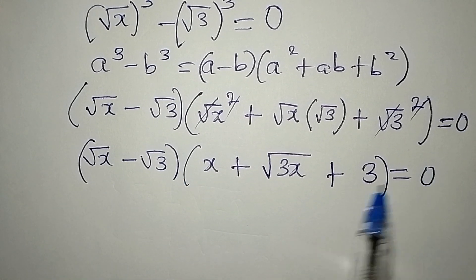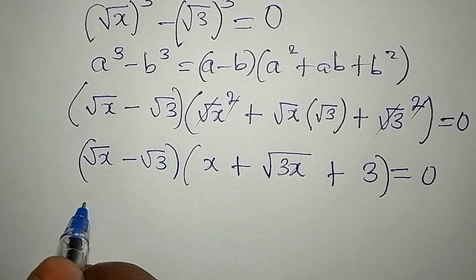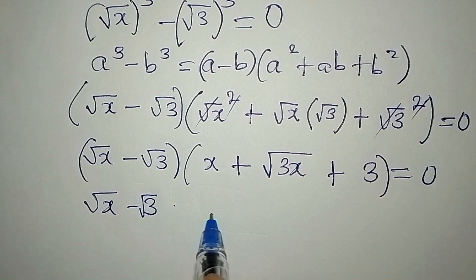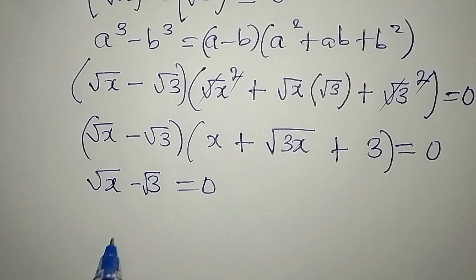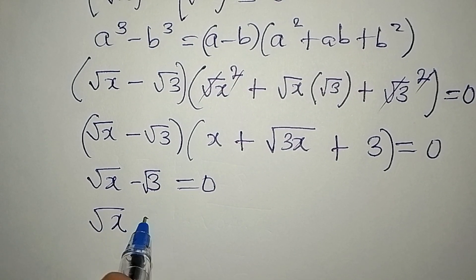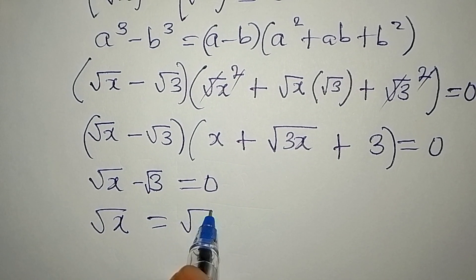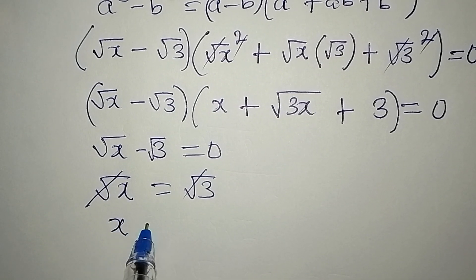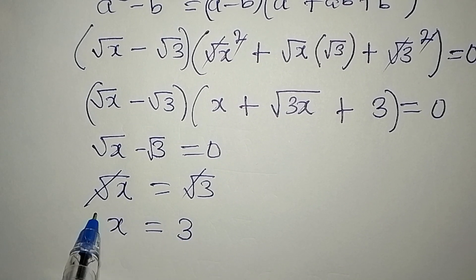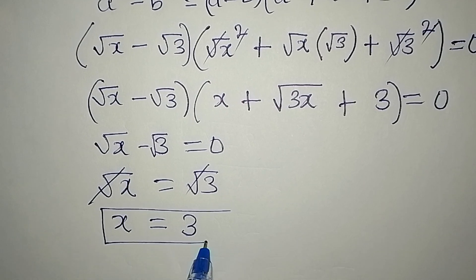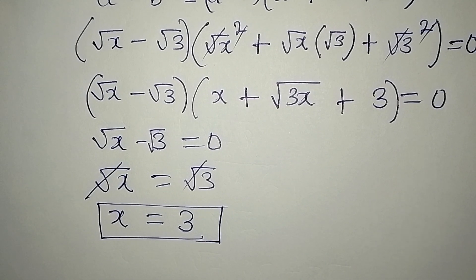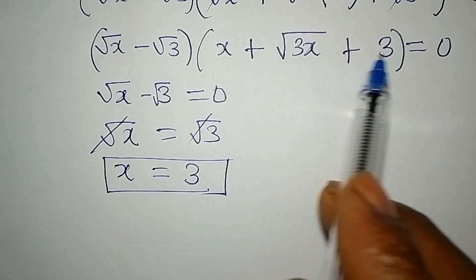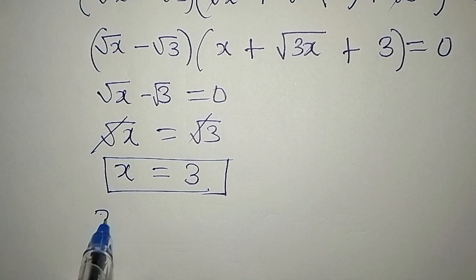From here we say either the first factor equals zero or the second factor equals zero. So square root of x minus square root of 3 equals zero, meaning square root of x equals square root of 3. The square roots cancel and our x equals 3. So this is a real solution.